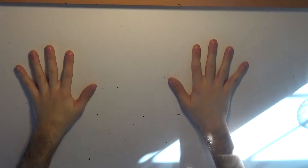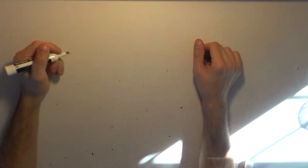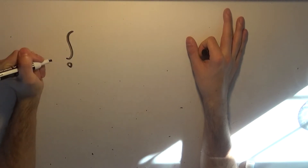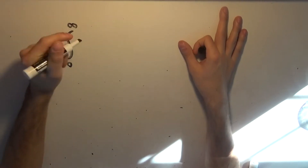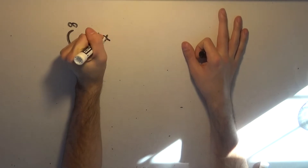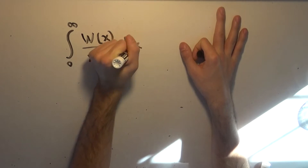So today we're doing an integral. We're going to do the integral from zero to infinity of the Lambert W Function divided by x times the square root of x, dx.